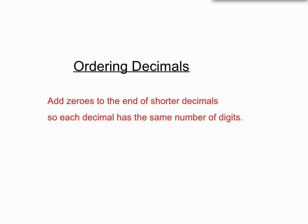Okay, let's recap. When we are ordering decimals we will add zeros to the end of the shorter decimals so each decimal has the same number of digits, so that we can put them in order in a sensible way. And we must remember, always give the original versions for our final answer. Hope that helps. See you next time.